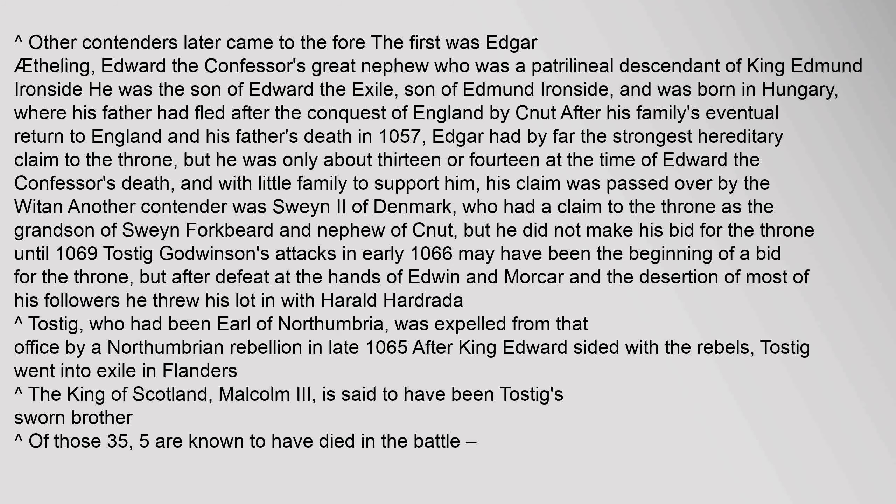Other contenders later came to the fore. The first was Edgar Aetheling, Edward the Confessor's great-nephew, who was a patrilineal descendant of King Edmund Ironside. He was the son of Edward the Exile, son of Edmund Ironside, and was born in Hungary, where his father had fled after the conquest of England by Canute. After his family's eventual return to England and his father's death in 1057, Edgar had by far the strongest hereditary claim to the throne, but he was only about 13 or 14 at the time of Edward the Confessor's death, and with little family to support him, his claim was passed over. Another contender was Swein II of Denmark, who had a claim to the throne as the grandson of Swein Forkbeard and nephew of Canute, but he did not make his bid for the throne until 1069. Tostig Godwinson's attacks in early 1066 may have been the beginning of a bid for the throne, but after defeat at the hands of Edwin and Morcar and the desertion of most of his followers, he threw his lot in with Harold Hardrada.